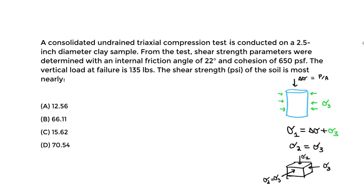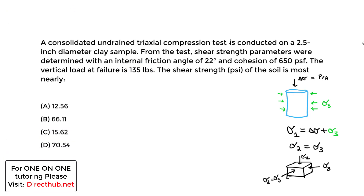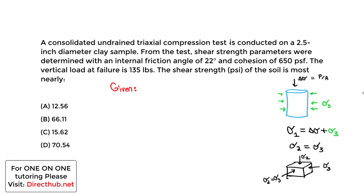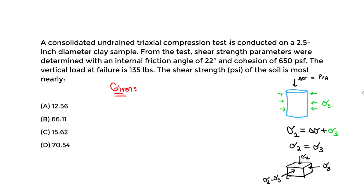Now let's do an example. A consolidated undrained triaxial compression test is conducted on a 2.5-inch diameter clay sample. From the test, shear strength parameters were determined: an internal friction angle of 22 degrees and cohesion of 650 PSF. The vertical load at failure is 135 pounds. We want to find the shear strength of the soil in PSI. The first step is to write out what we're given.